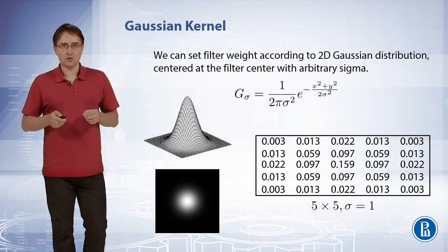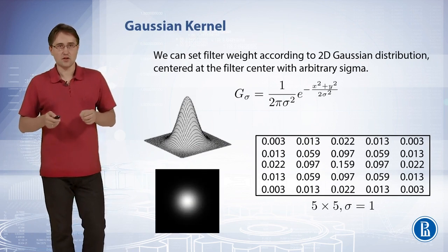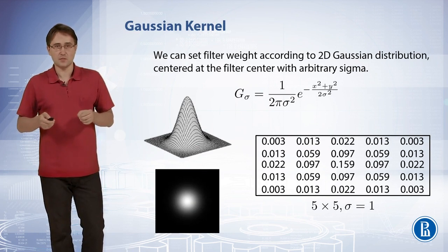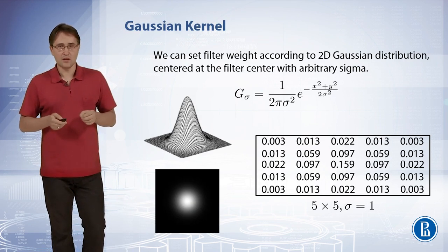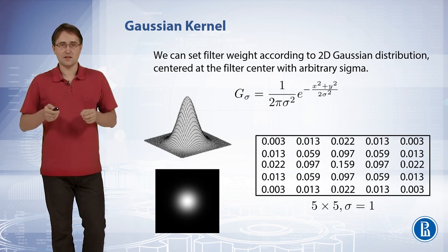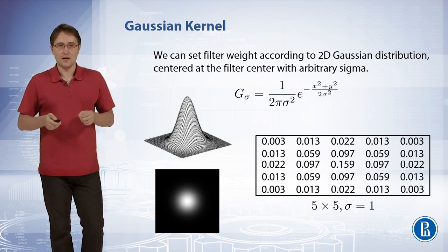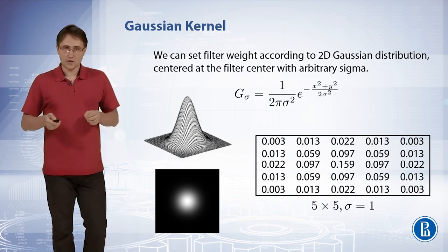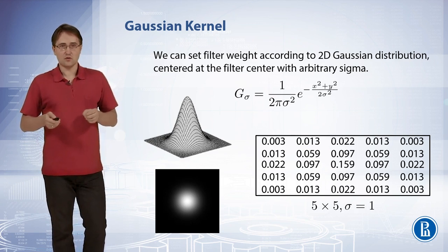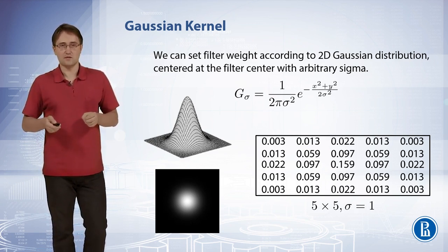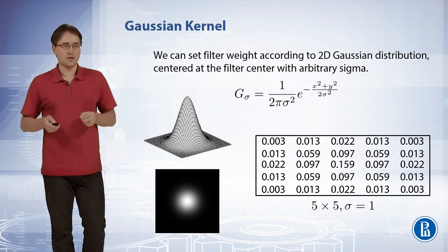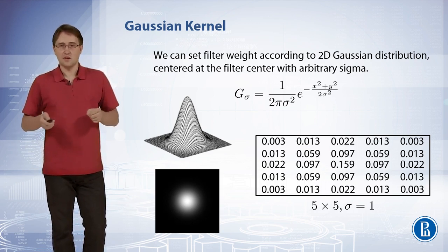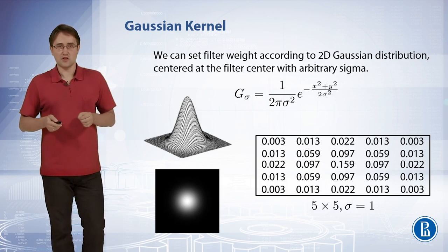We can set filter weights according to a two-dimensional Gaussian distribution, centered at the filter center with an arbitrary sigma. In this particular example, sigma is set to 1 and filter size is set to 5 by 5. Filters with weights distributed according to a Gaussian distribution are called Gaussian filters, and they are probably the most used filters in image processing and image recognition.